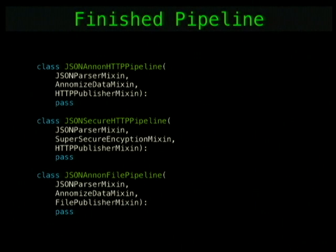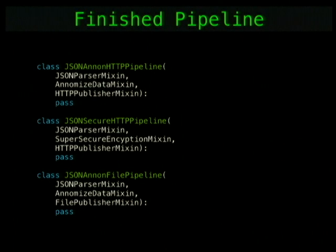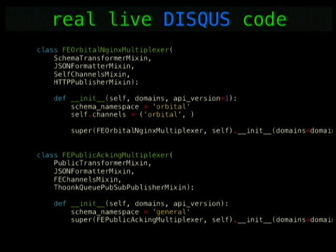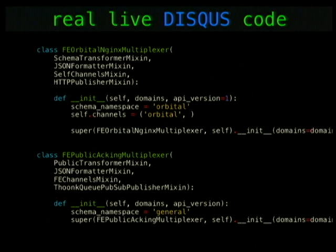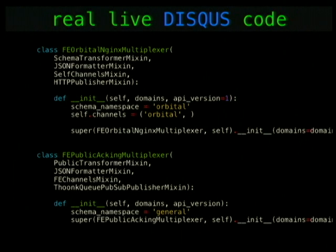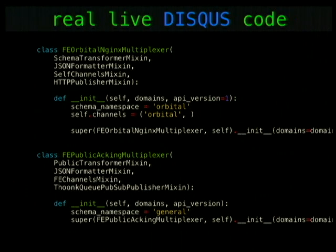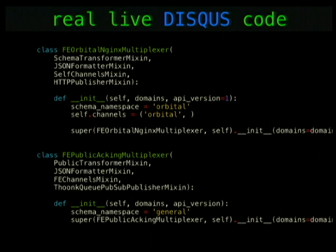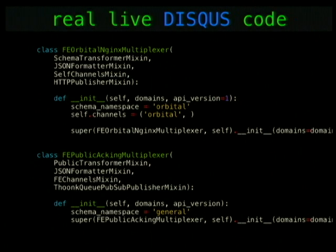This is something I thought up and it might be a horrible idea — I want to hear your thoughts. This is actual Disqus code: the top pipeline powers the globe map I mentioned earlier, and the bottom one powers a reliable acking front-end endpoint for customers who need guaranteed data receipt. They're mostly the same but just a little different, and they were super easy to write.